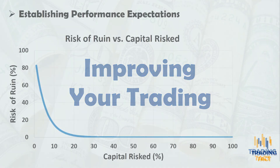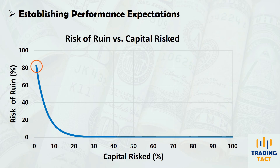With knowledge of your risk of ruin, you have an estimate of the amount of capital you may lose during trading. This helps you establish performance expectations. Using Vince's formula, here's the risk of ruin as a function of the percent of capital risked for the trend-following strategy. If you are only willing to risk 1% of your initial capital, there's an 83% chance you will hit that level.